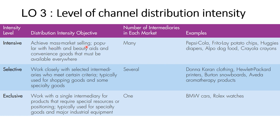Intensive distribution is when manufacturers use this strategy to achieve mass market selling. It is popular with health and beauty aids and convenience goods that must be available everywhere, with many intermediaries. Exclusive distribution has only one or very few intermediaries for products that require special resources or positioning — typically used for specialty goods and major industrial equipment. The number of intermediaries is usually one per market area, for example one in West Malaysia and one in Sarawak. Examples include BMW cars and Rolex watches.